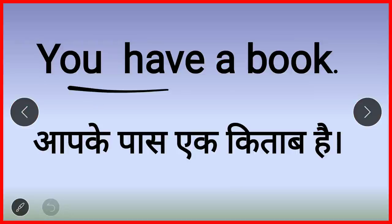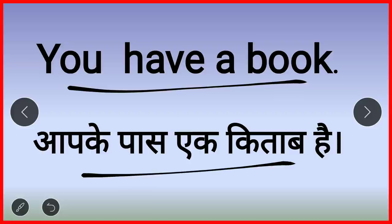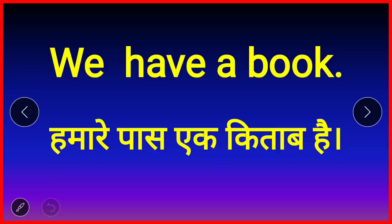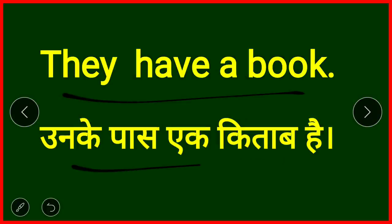More examples: 'You have a book' — aap ke paas ek kitab hai. Here it is being used as a main verb meaning to possess. 'We have a book' — humare paas ek kitab hai. 'They have a book' — un ke paas ek kitab hai, ya un logo ke paas ek kitab hai.